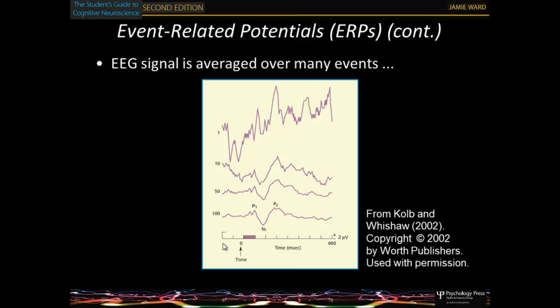You flash a stimulus to a person and record the electrical activity in the brain — you get a series of electrical peaks measurable at the scalp. As with single cell recordings, time goes along the x-axis, and electrical activity in microvolts goes up the y-axis. If you present one face, you just see weird fluctuations of electrical activity, because the whole brain is generating electrical signals, not just the parts involved in face recognition — a low signal to noise ratio. By averaging together many trials, you get rid of the random noise.